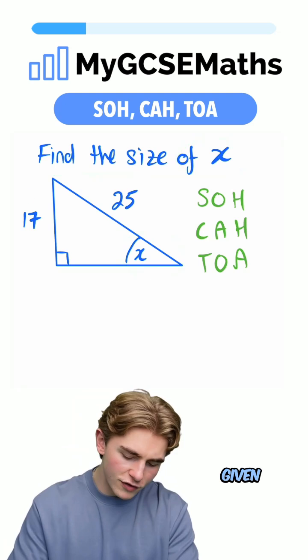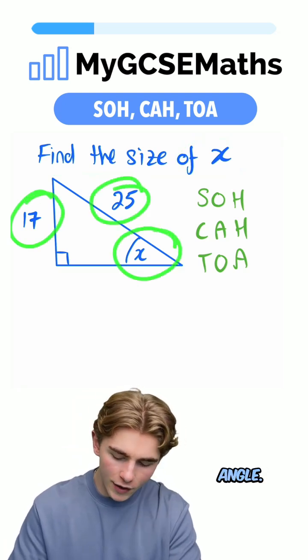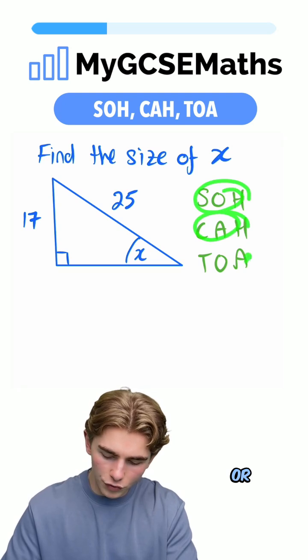We're dealing with a right angle triangle. We're given two side lengths and asked to work out an angle, so we know we're going to be using either SOH, CAH, or TOA.